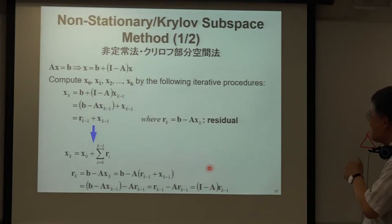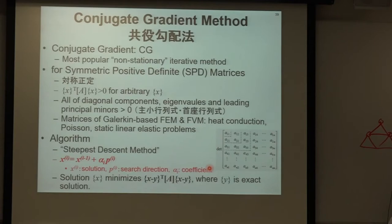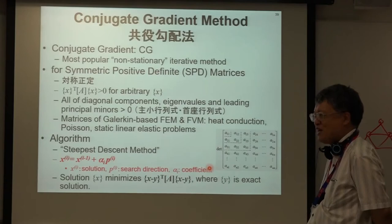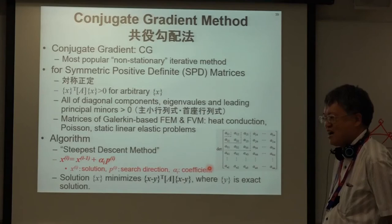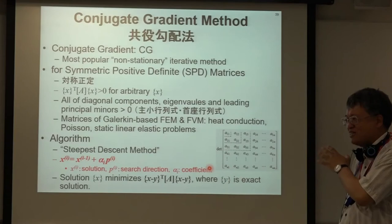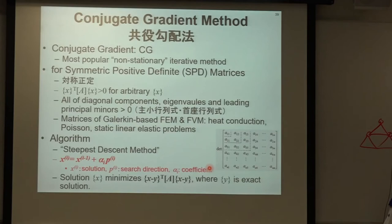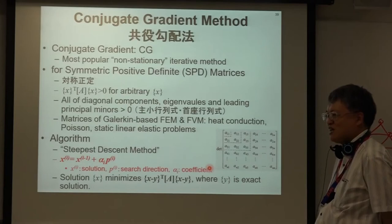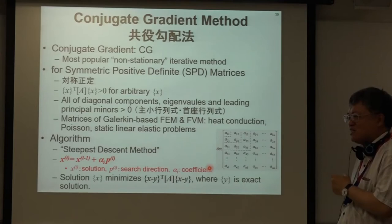The conjugate gradient method is the most popular non-stationary iterative method and is applicable only to symmetric positive definite (SPD) matrices — which appear in many applications. The algorithm is based on the steepest descent method: x_i = x_{i-1} + alpha * P, where P is a search direction (gradient) vector and alpha is a scalar step size.